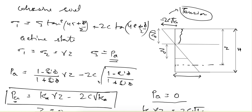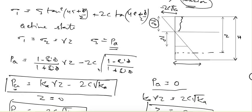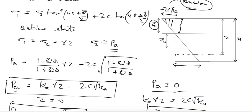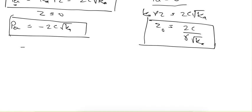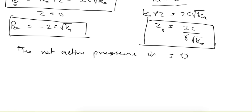It means that up to depth z0 the soil is in tension. This is the pressure distribution for this zone, and if we go further this will be the pressure distribution. Up to depth 2z0, the net active earth pressure is equal to 2z0, which equals 4c/(γ·√Ka).